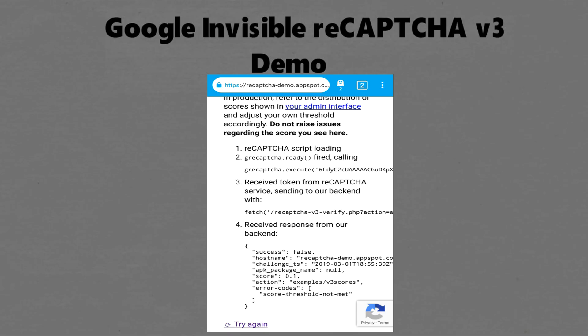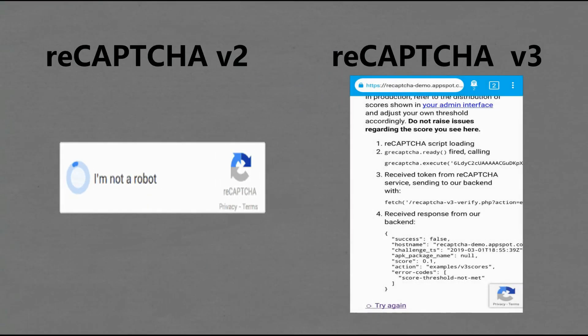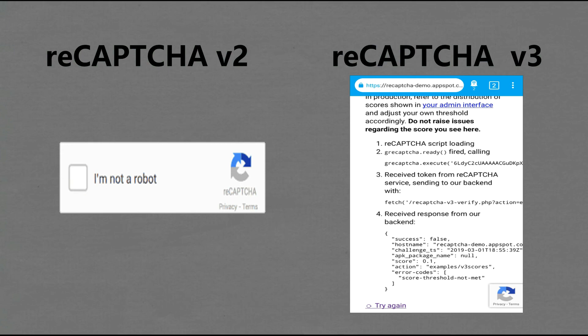The issue with reCAPTCHA v3 is that if you receive a low score for whatever reason, there is nothing you can do on your end. In reCAPTCHA v2, humans can still receive a challenge and a chance to prove they are not bots. But in reCAPTCHA v3, if the system thinks you are a bot, then you are a bot.